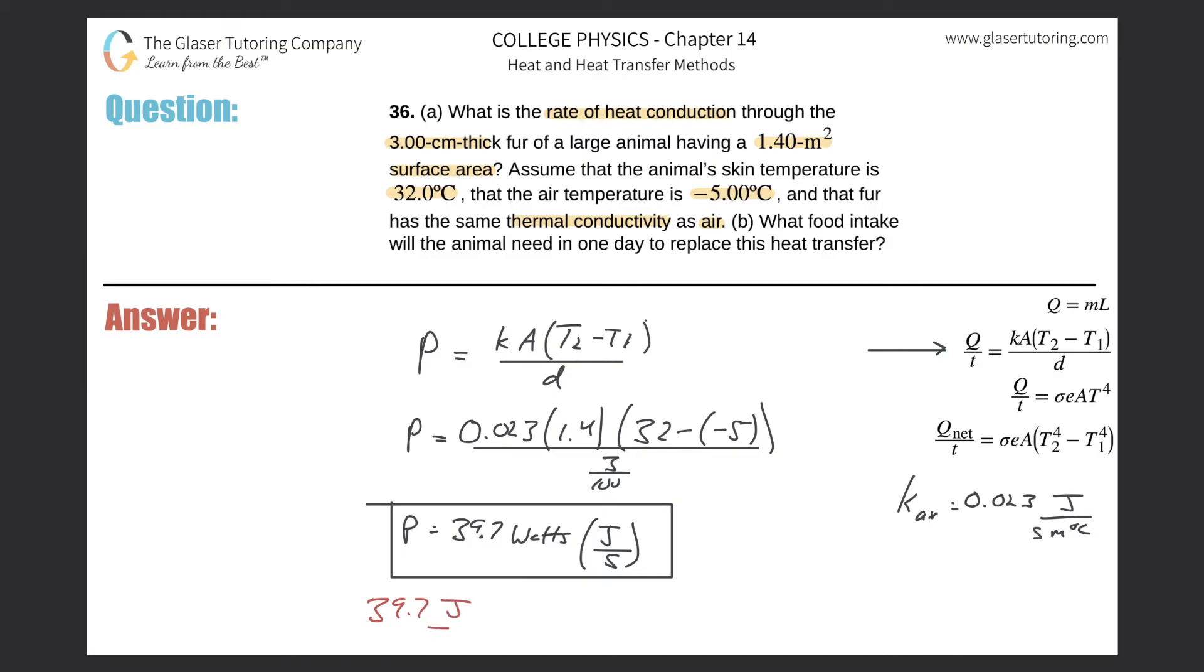39.7 joules per second, convert seconds into days. So there's 3,600 seconds in one hour, and then there's going to be 24 hours in one day, and now we find the amount of joules per day, which is what they want.